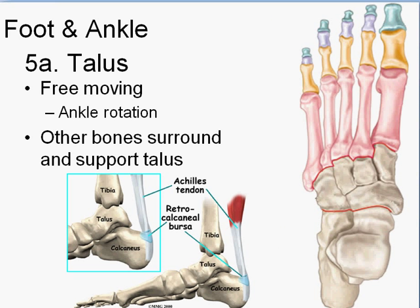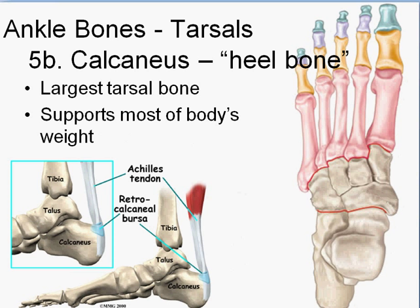Moving on to the foot and ankle. The first ankle bone is the talus, at the top, which you can also see in the side view. It's going to articulate with the tibia, allowing pretty free rotation of the foot. Underneath it is the calcaneus, which is your heel bone. It connects the Achilles tendon, but most importantly it supports most of the body's weight, which is why it's so large.